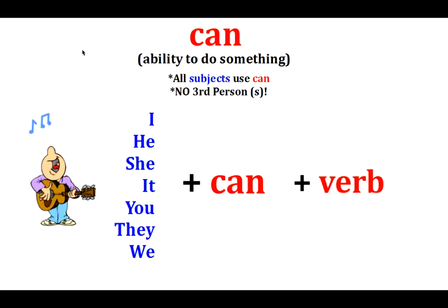Now it's time for our grammar. Today we are talking about can. Can is the ability to do something. Can is special — it's a special verb because all subjects use can. There is no third-person S.